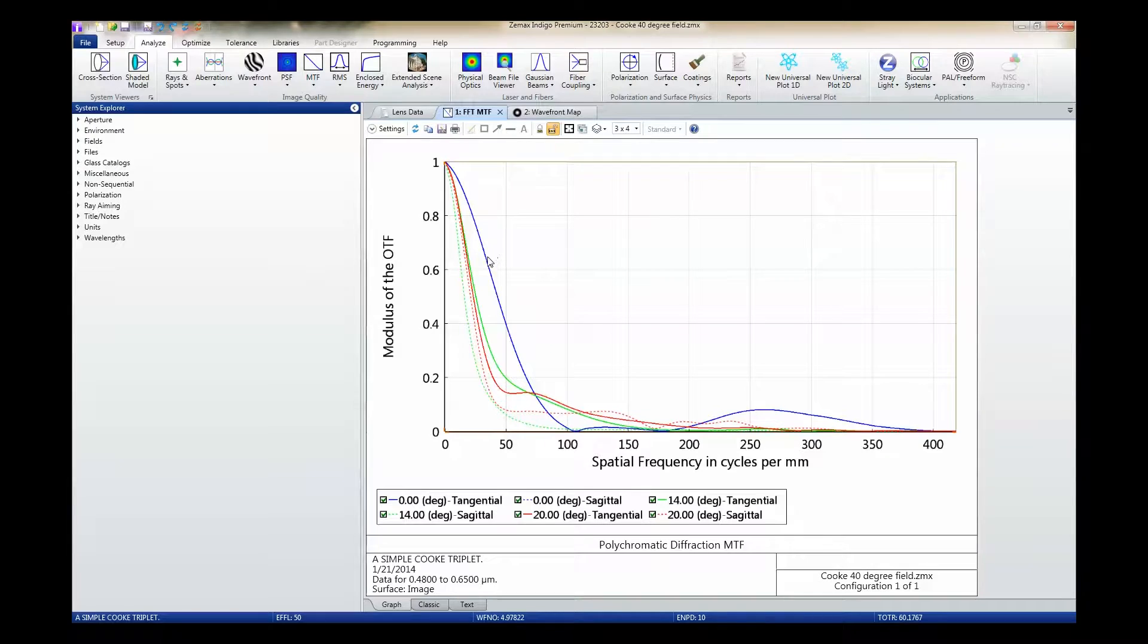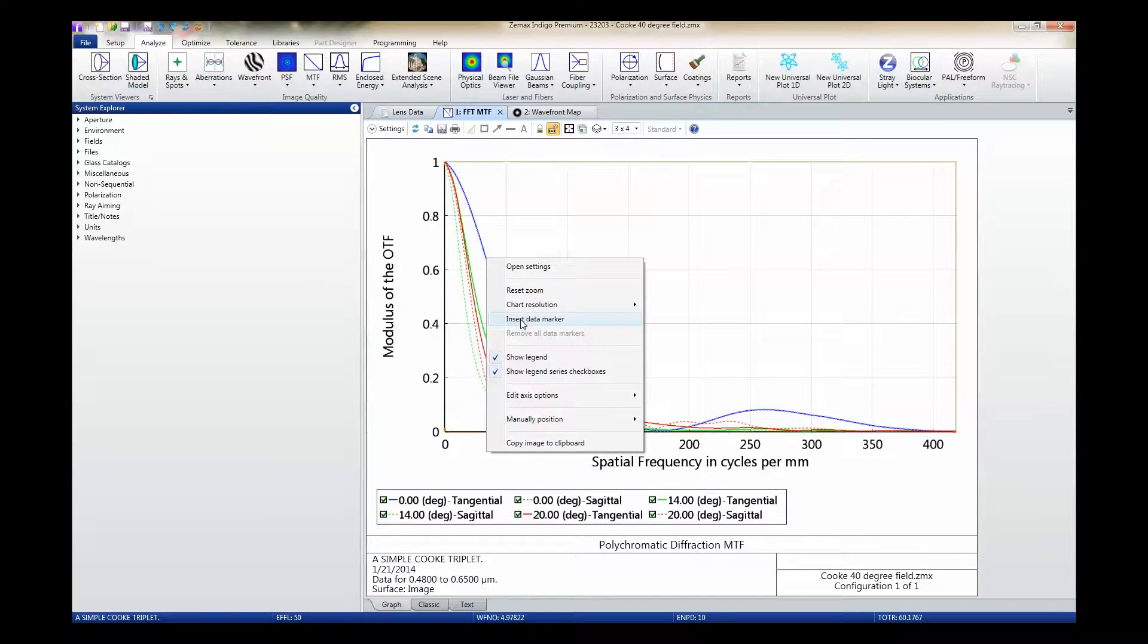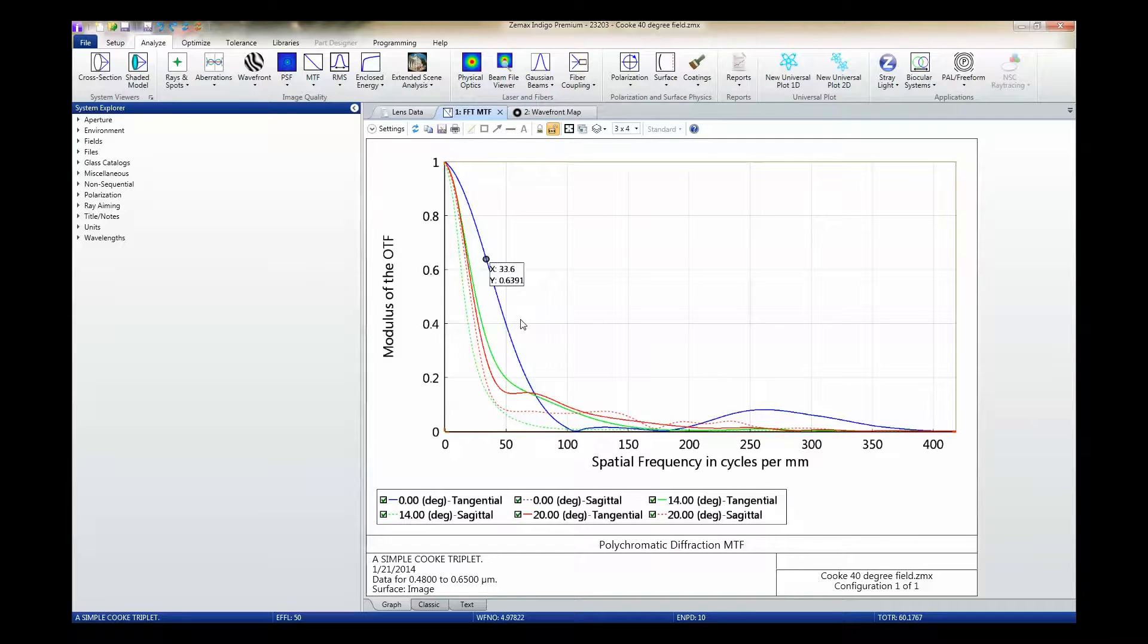More accurate information can be obtained using data markers. To add a data marker to a curve, we simply right-click on the curve of interest and select insert data marker. This places a marker on the curve which returns the exact xy values at the point where the marker has been placed.